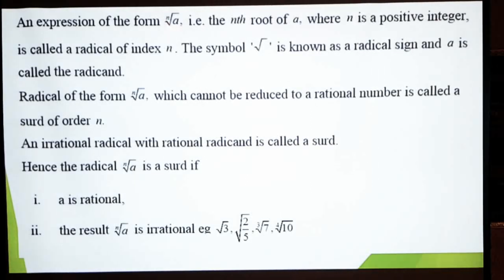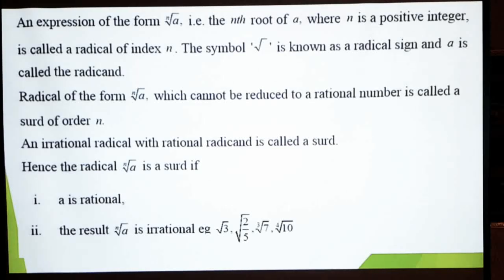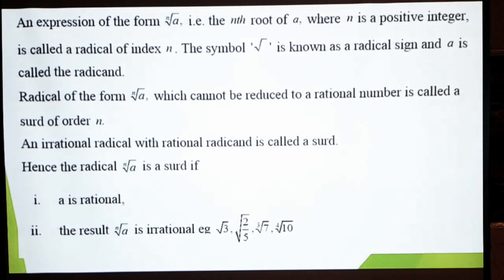یعنی یہ جو n ہے یہ positive integer ہوگا — means to say 1, 2, 3, 4, 5. اس کو radical of index n کہتے ہیں۔ اس کو radical اس لئے کہتے ہیں کہ اس میں radical sign ہے اور یہ جو n ہے یہ اس کا index کہلاتا ہے۔